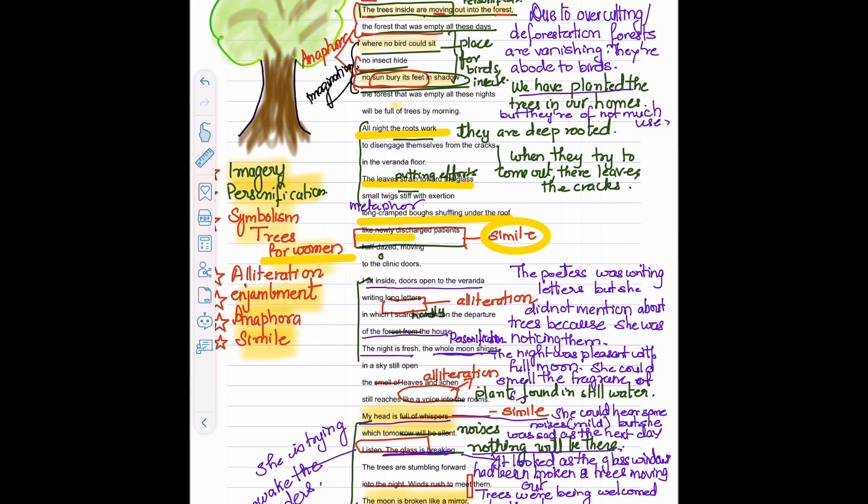We have imagery, personification, symbolism, enjambment, anaphora, simile, different kinds of poetic devices. The poem doesn't have any rhyme scheme, it is a free verse. Like the trees inside are moving is personification, all night the roots work, personification, the night the whole moon shines, personification.